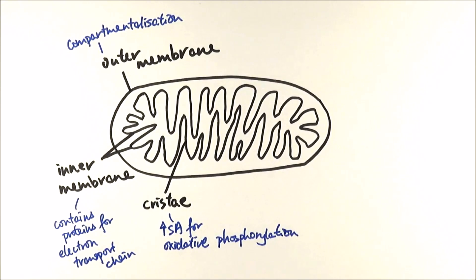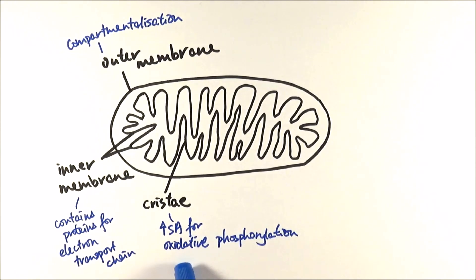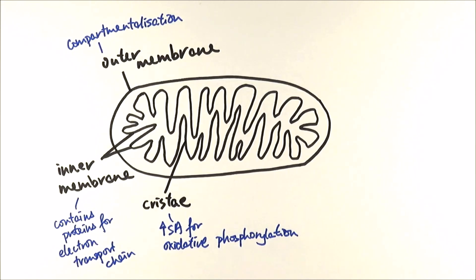The inner membrane contains proteins for the electron transport chain. If you have studied photosynthesis already, you would have come across this before. It's the key mechanism that produces ATP, and it contains electron carriers and an enzyme called ATP synthase — as the name implies, it makes ATP. The cristae also increase the surface area for oxidative phosphorylation, which is the final stage of respiration that contains the electron transport chain for the mass production of ATP. We will cover that in another video.